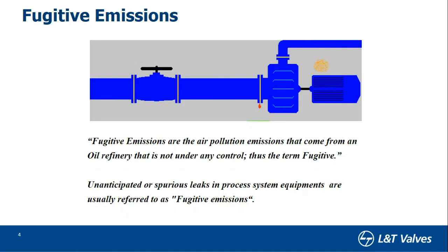Fugitive emission — what exactly do we mean by fugitive emission? As explained in the slide, fugitive emissions are air pollution emissions that come from an oil refinery that are not under any control. That's the term 'fugitive.' In simple terms, any harmful, undesirable leakage to the atmosphere is termed a fugitive emission.